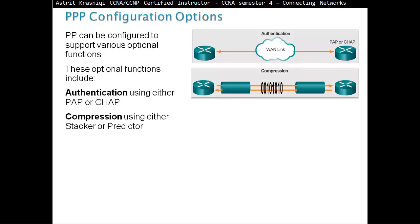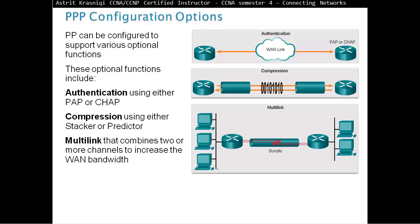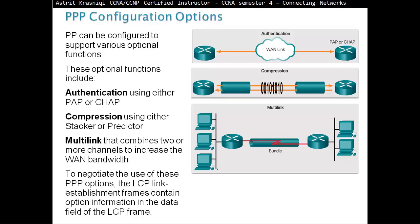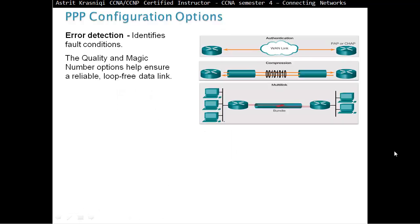Compression, we can configure compression using either stacker or predictor. And this is the cool thing, we can configure multi-links, which we can combine two or more channels to increase the wide area network bandwidth. To negotiate the use of these PPP options, the LCP link establishment frame containing options information in the data field of the LCP frame.